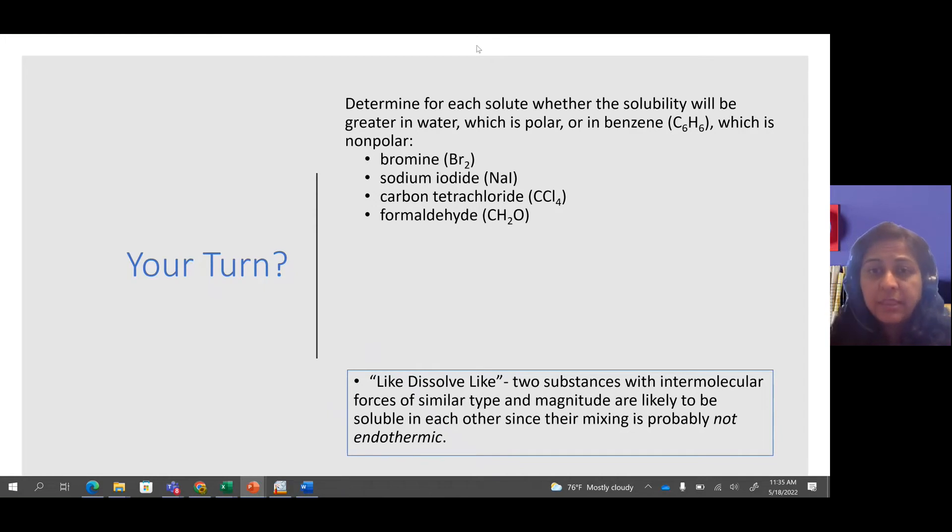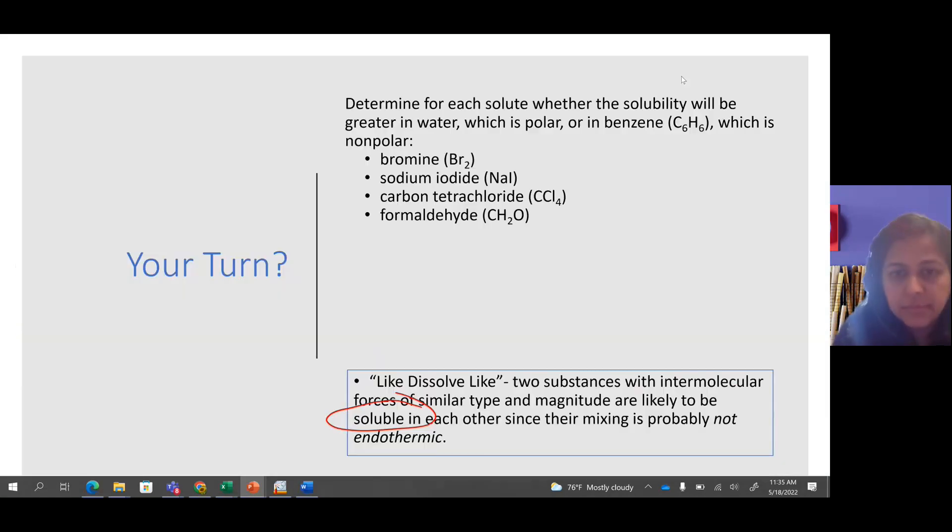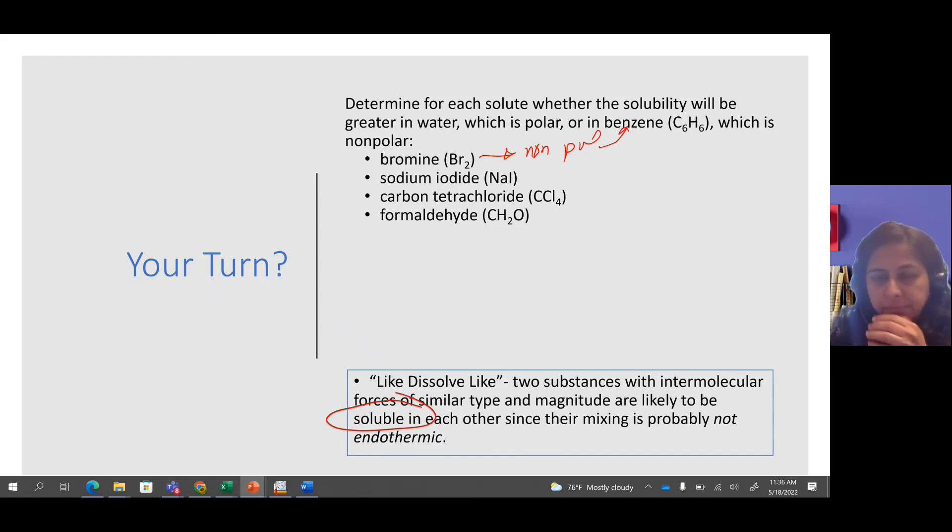That means if we are talking about two substances, and if those two substances have similar type of intermolecular forces and magnitude, then they are likely to be soluble. Otherwise, they would not be soluble. Let's look at bromine. Bromine is non-polar, so it is soluble in benzene. Like that, you will get the answers for this question.